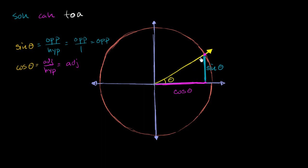But now let's do something interesting. This is the angle theta. Let's think about the angle theta plus pi over 2. If I were to essentially add pi over 2 to this, I'm going to get a ray that is perpendicular to the first ray. Pi over 2 radians, if we think in degrees, is equivalent to 90 degrees — so when I say theta plus pi over 2, I'm talking in radians, and we're essentially adding 90 degrees to it. This angle right over here is theta plus pi over 2.